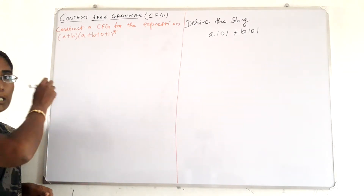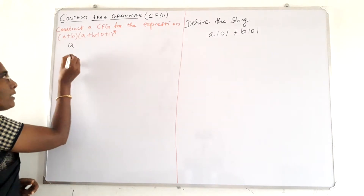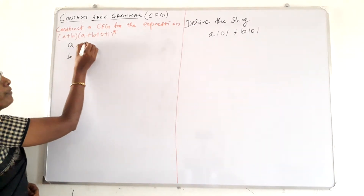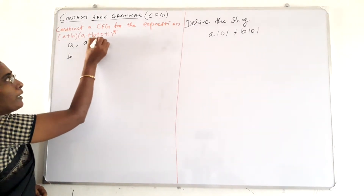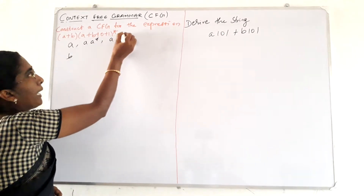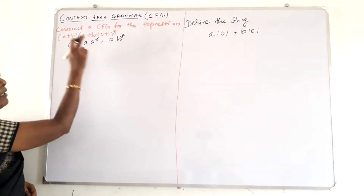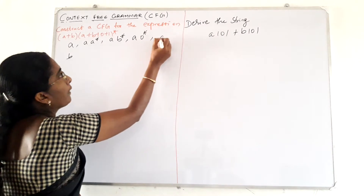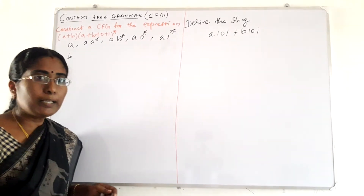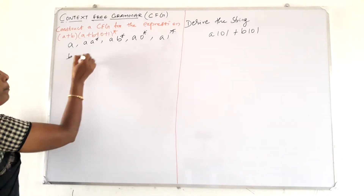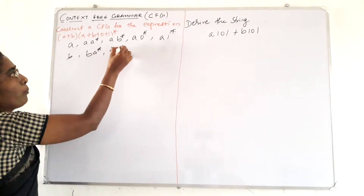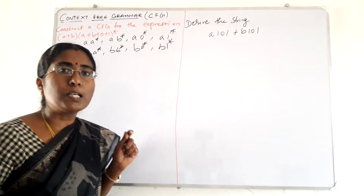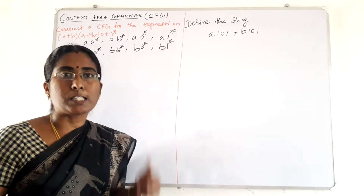The set of strings for this expression starts with either A or B, and it may consist of A followed by A star, or A followed by B star, or A followed by 0 star, or A followed by 1 star. Likewise for B: B followed by A star, B followed by B star, B followed by 0 star, B followed by 1 star.